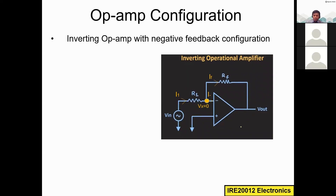This is the circuit construction again. We are applying the input voltage to this negative input terminal and we have the input resistor R1. We are also taking part of the output and feeding it back to the negative input terminal via this feedback resistor Rf. The other positive input terminal is grounded.